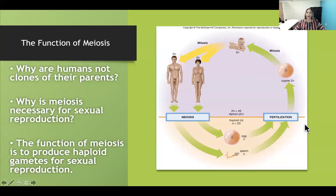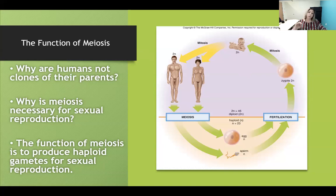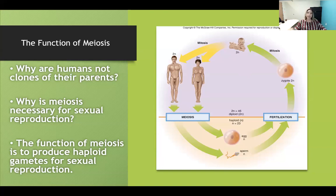Here we have the human life cycle. Notice in the lower left-hand corner is a definition about the function of meiosis. Meiosis is essential for sexual reproduction because it produces gametes, which are egg and sperm. The other purpose of meiosis is genetic recombination, which we will discuss in the next few slides.